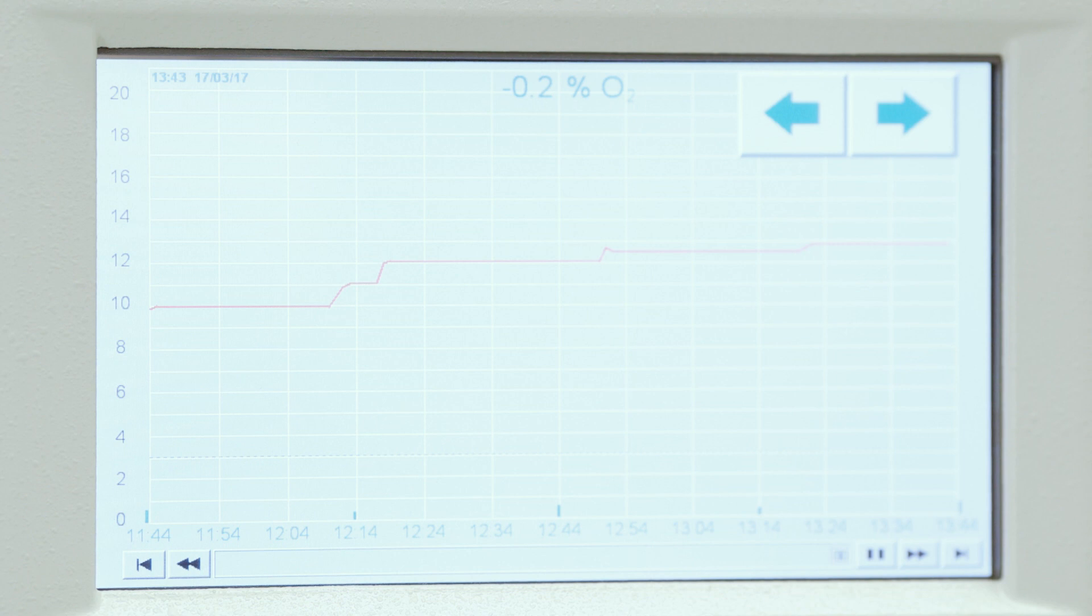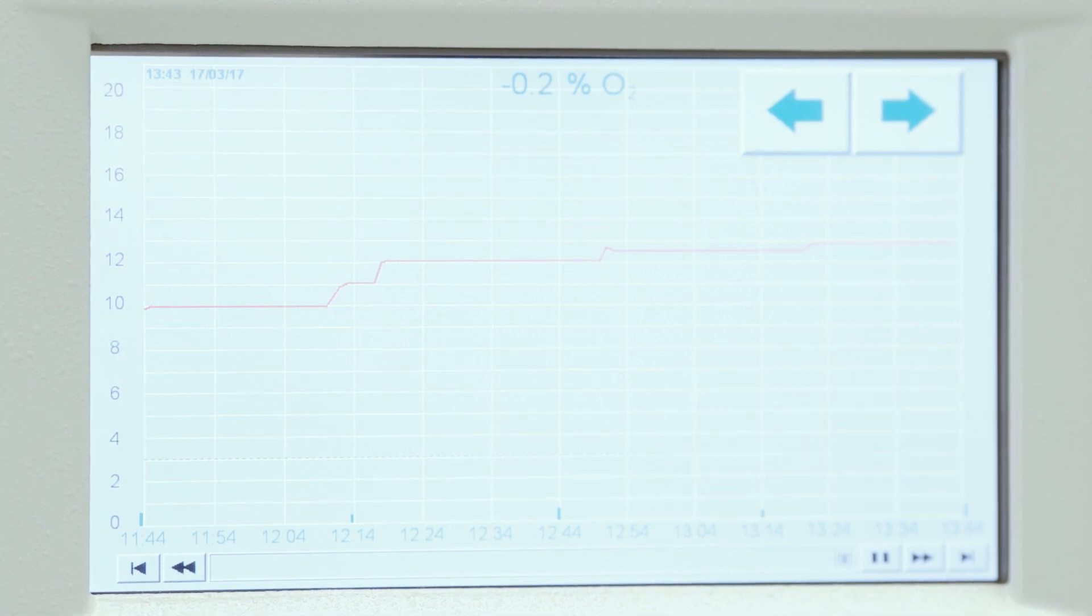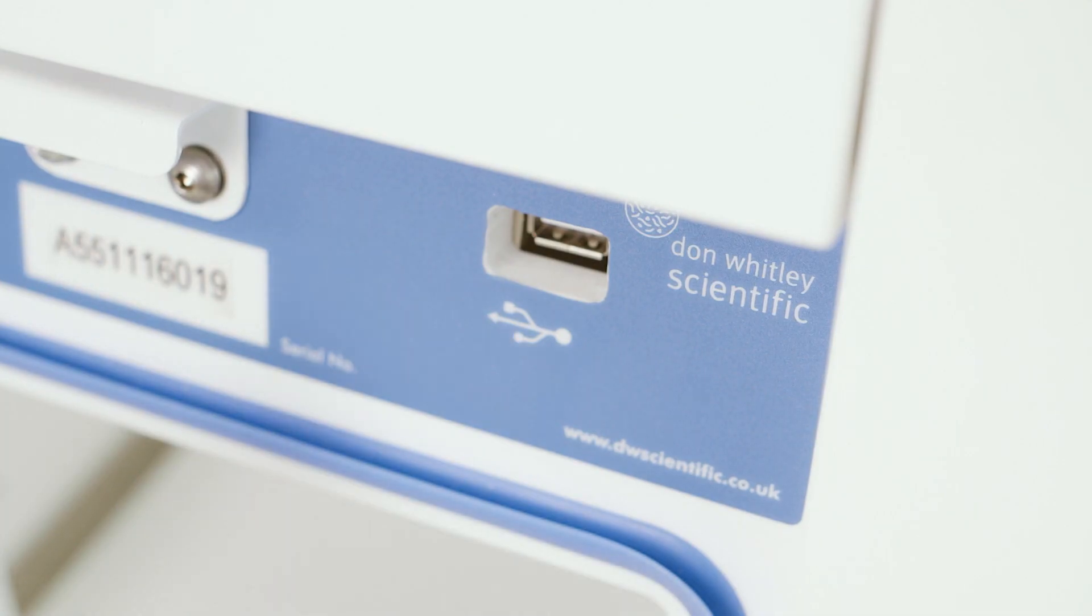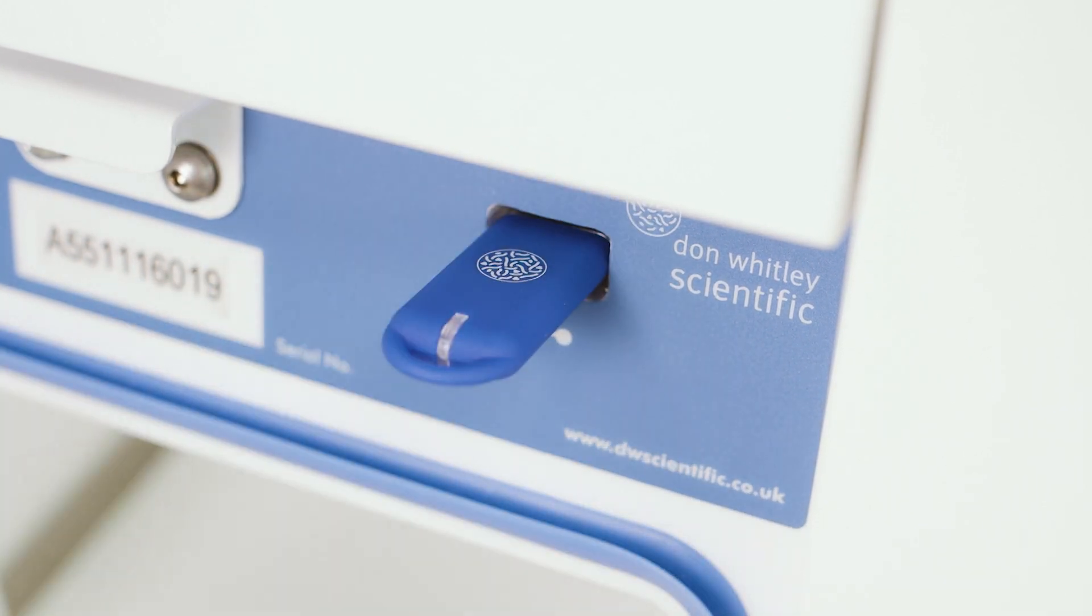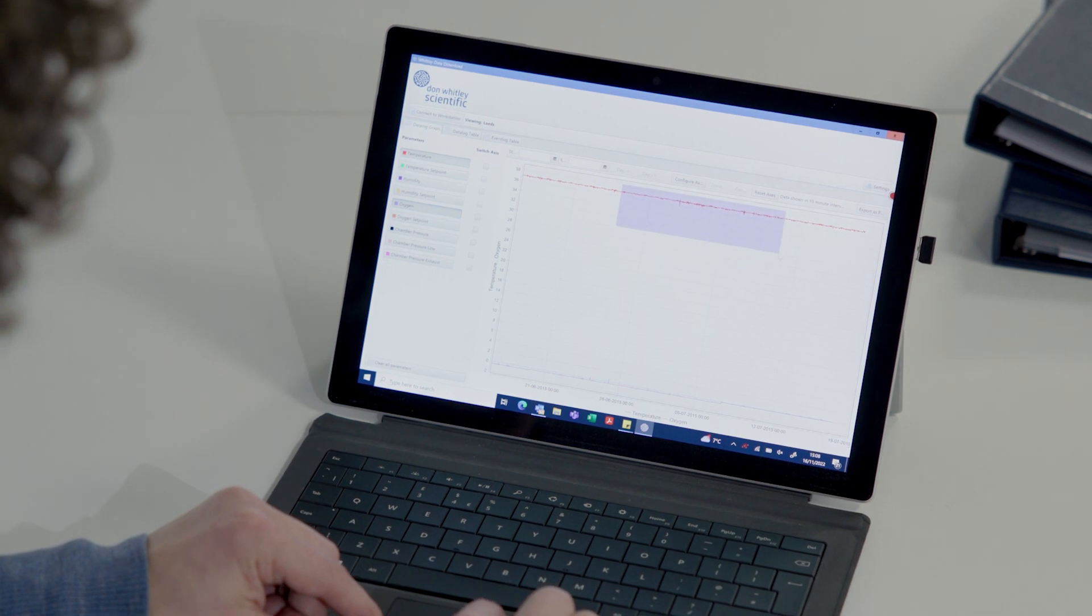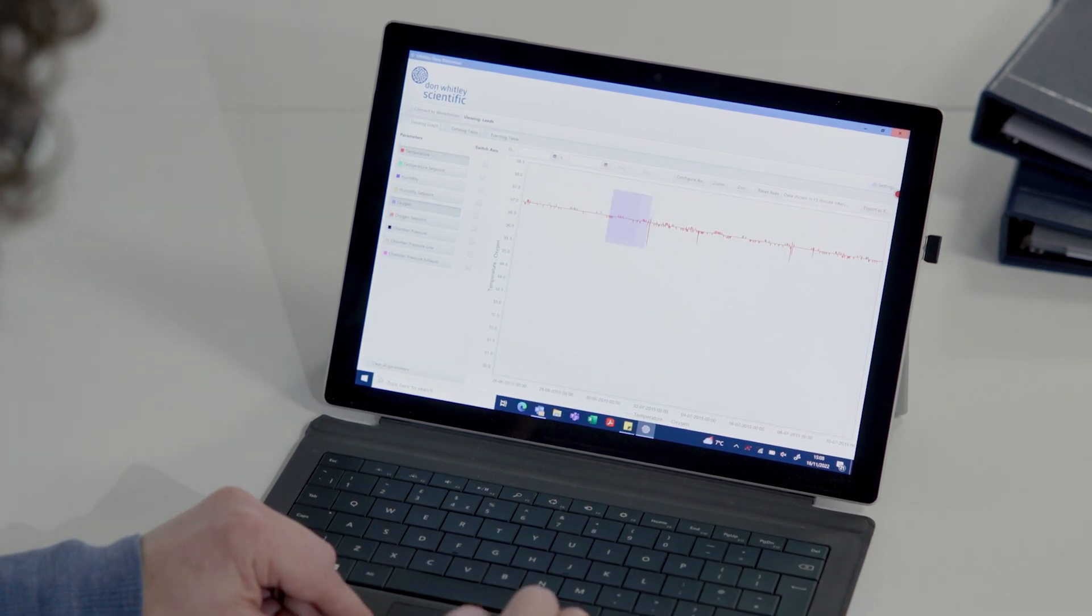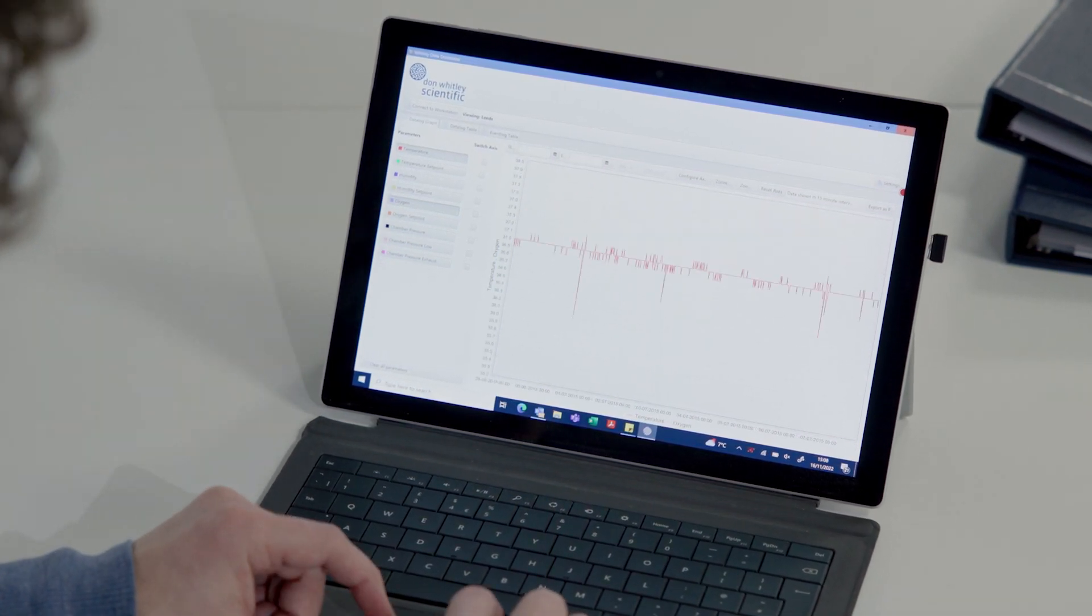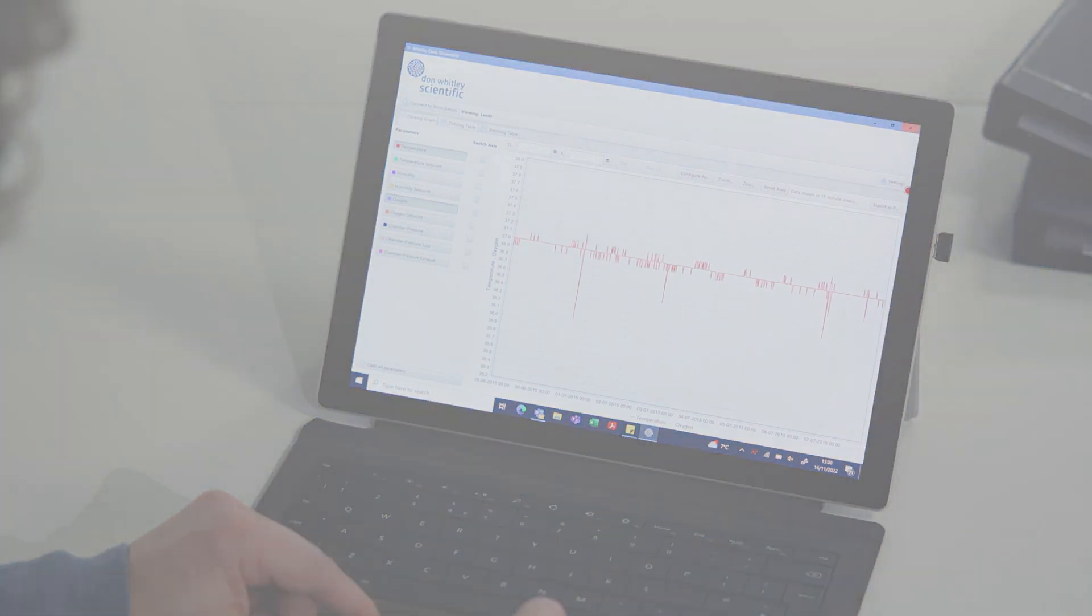The recorded data can be viewed on a screen or downloaded in a few seconds to a memory stick for further analysis in a spreadsheet. Parameters such as temperature, humidity and oxygen levels can also be monitored remotely and alerts can be sent via email directly from the workstation.